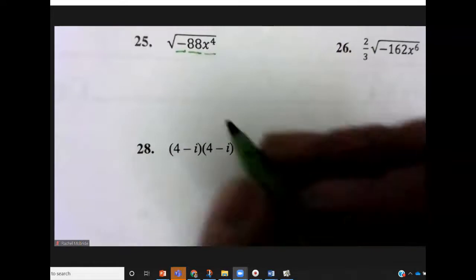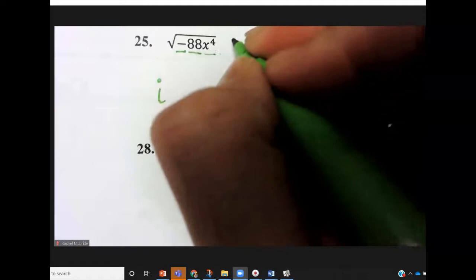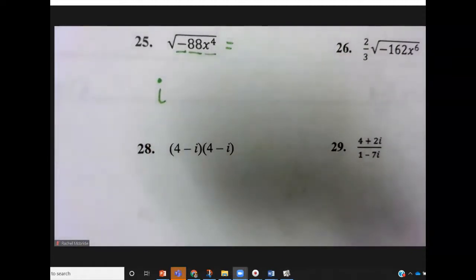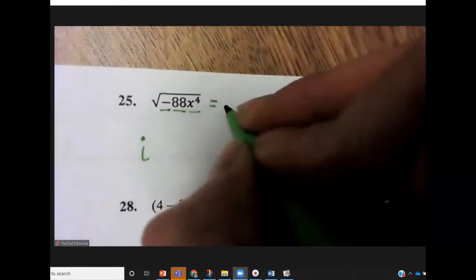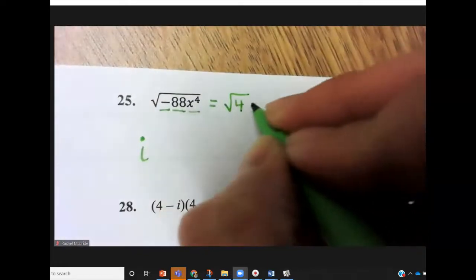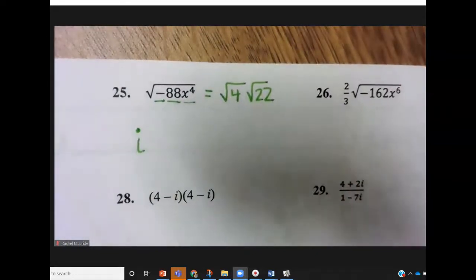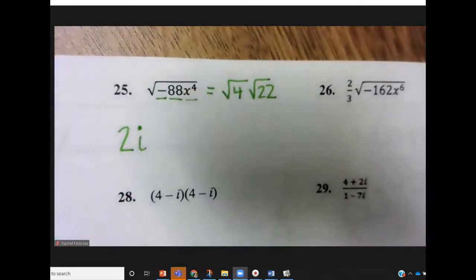So the negative under the square root becomes an i. 88 is 4. So if you do 88 divided by 4, you get 22. 22 is 2 and 11. Those are both prime. So the highest perfect square that goes into 88 is going to be 4. So 4 times 22 would give you 88. So we simplify the square root of 4 to be the number 2. So it becomes 2i.